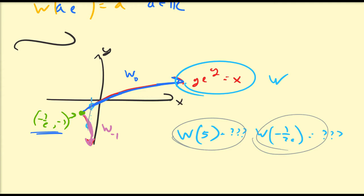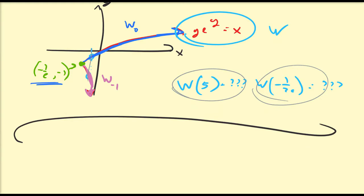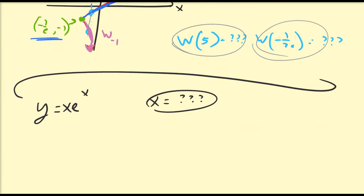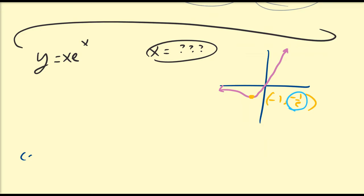The primary equation we're going to focus on is y = x·e^x, and our goal is to solve for x. Let's draw the graph of this function. The key point on this curve is (−1, −1/e), where −1/e is the minimum y-value of interest.